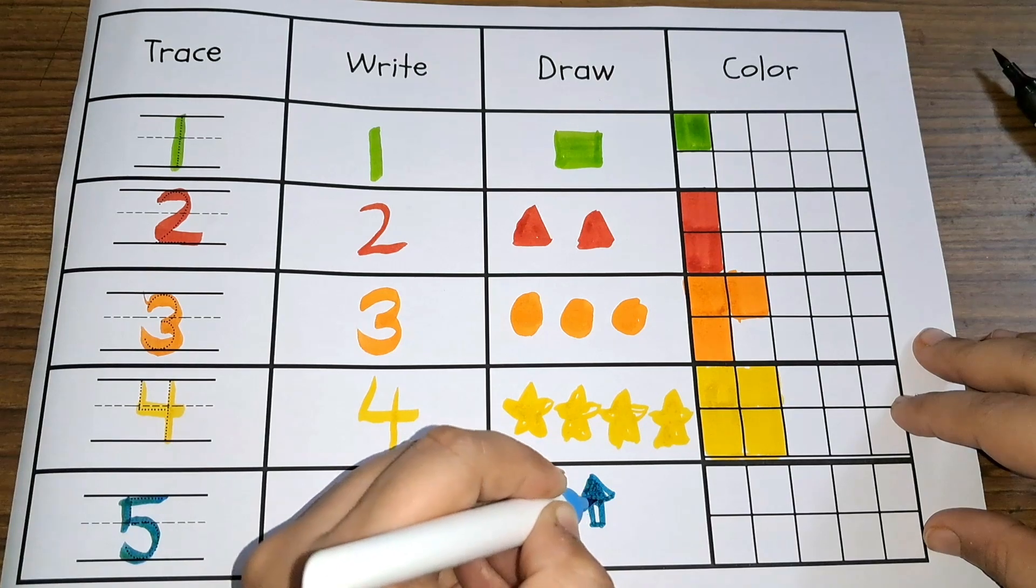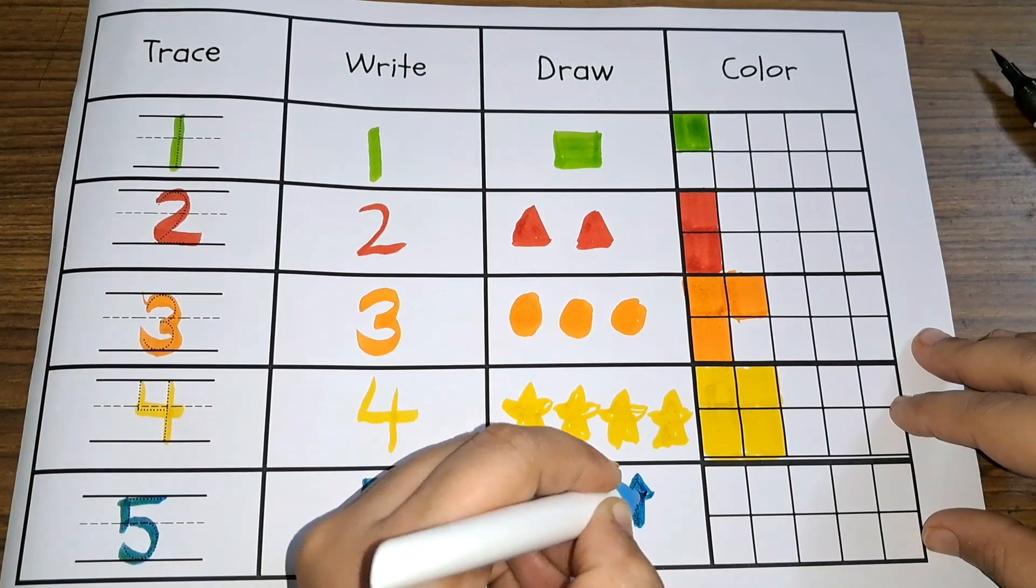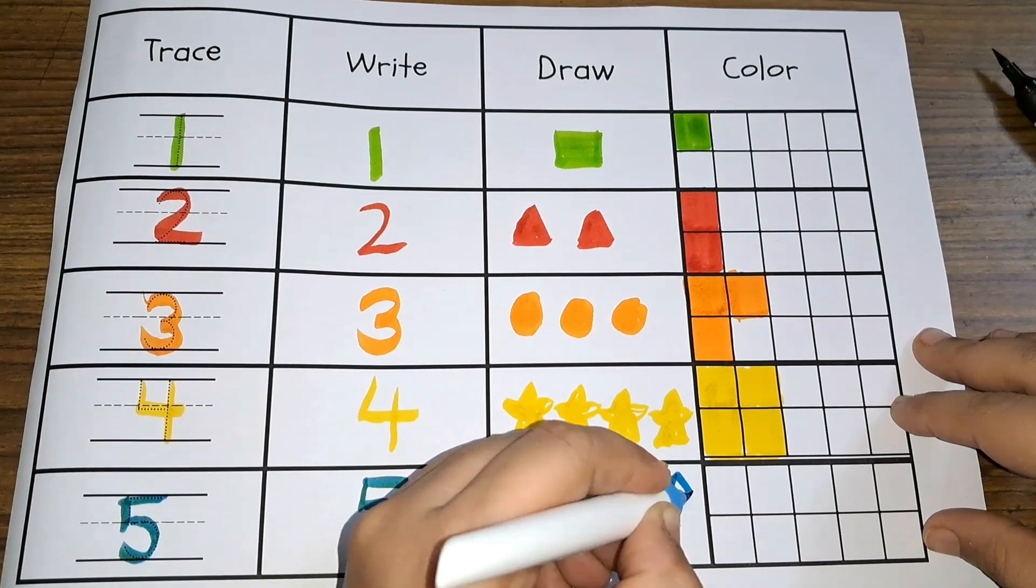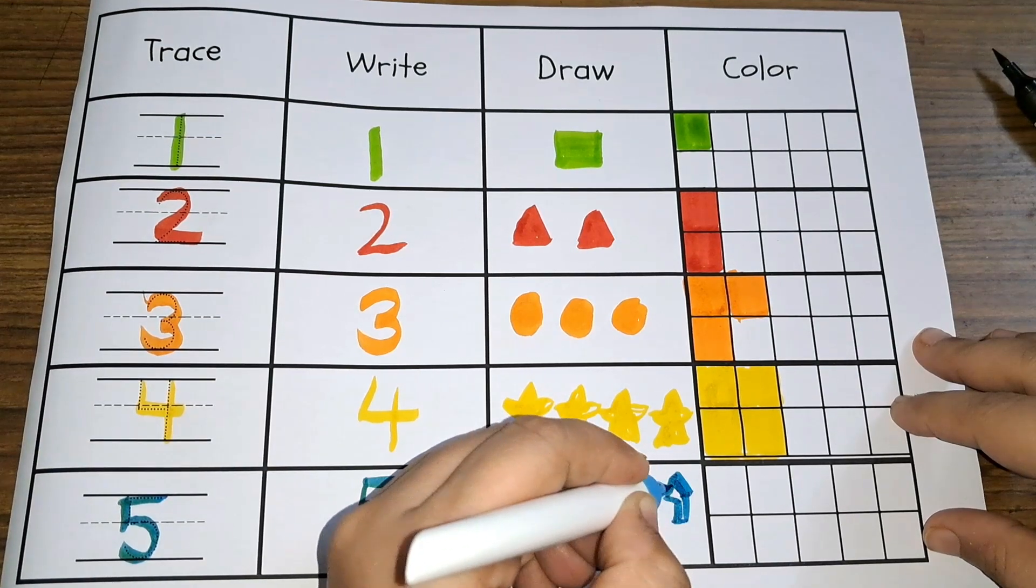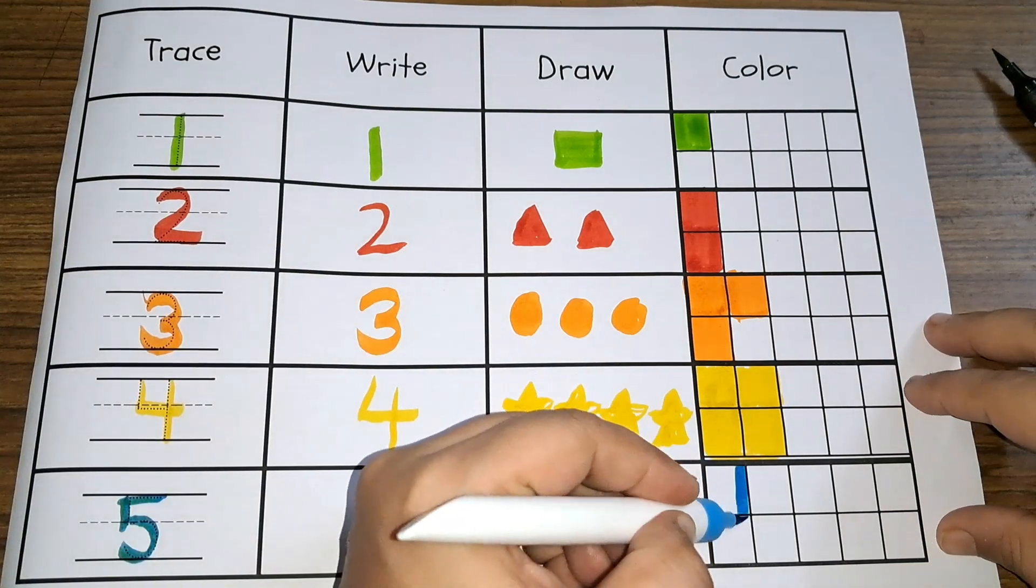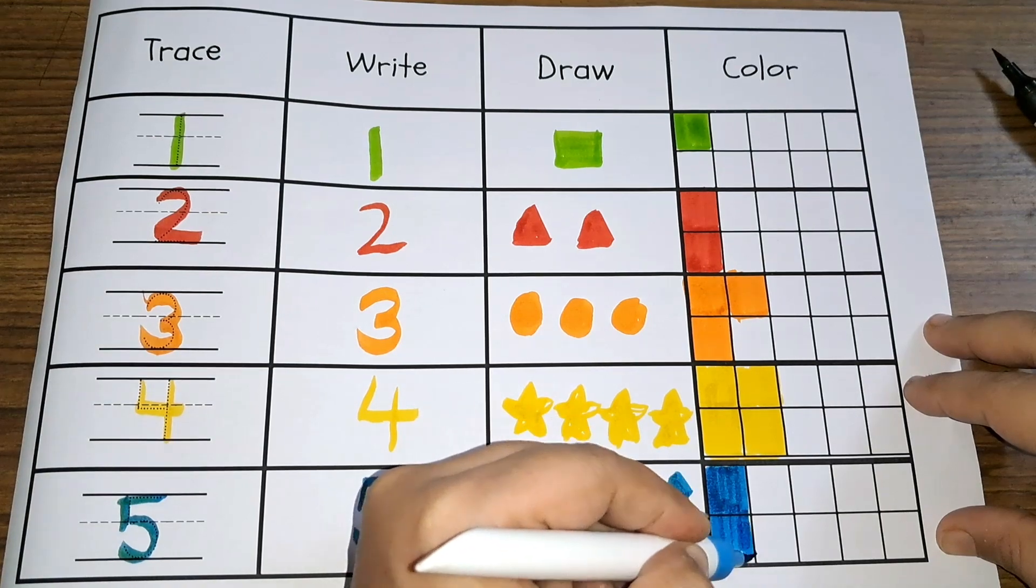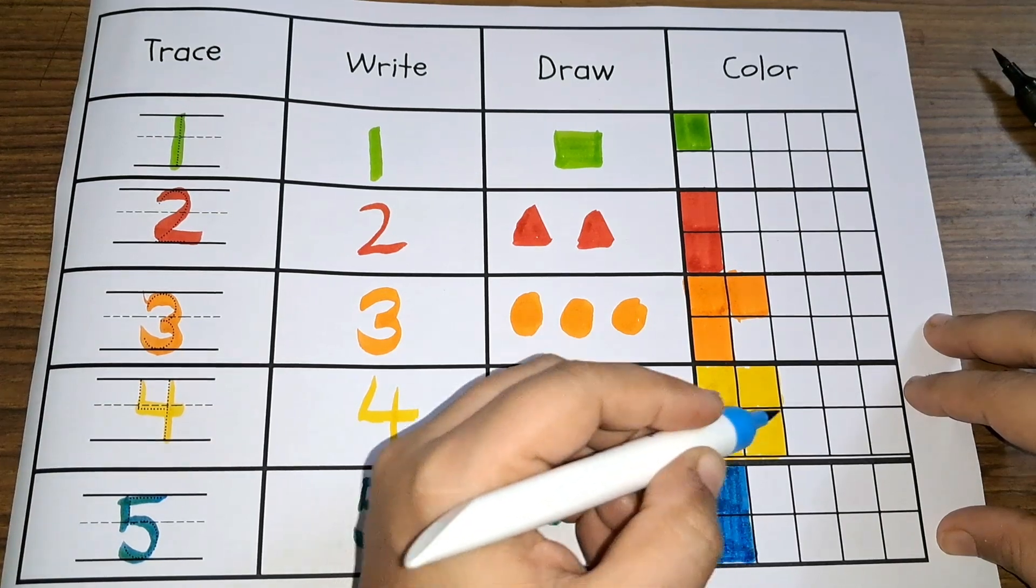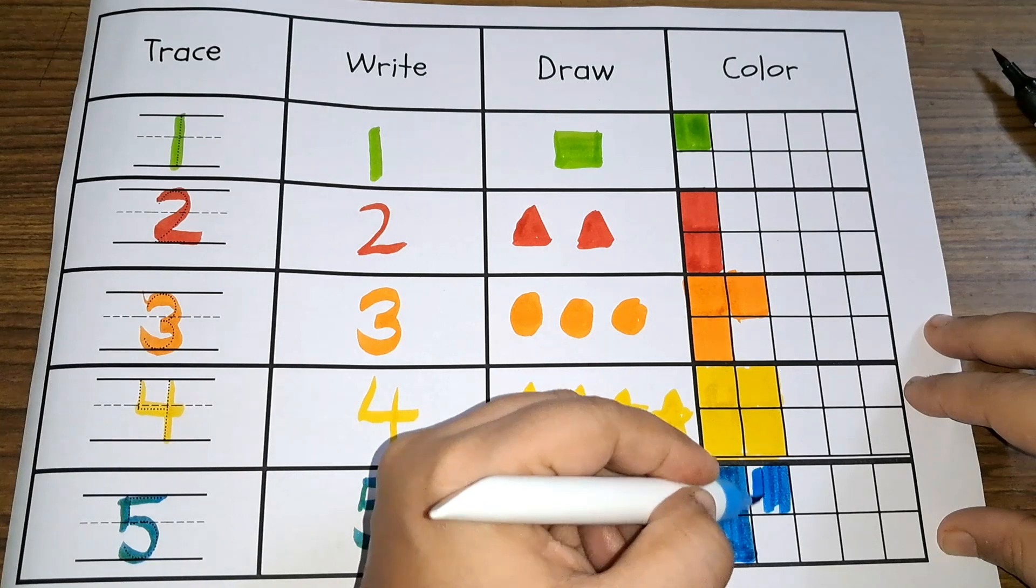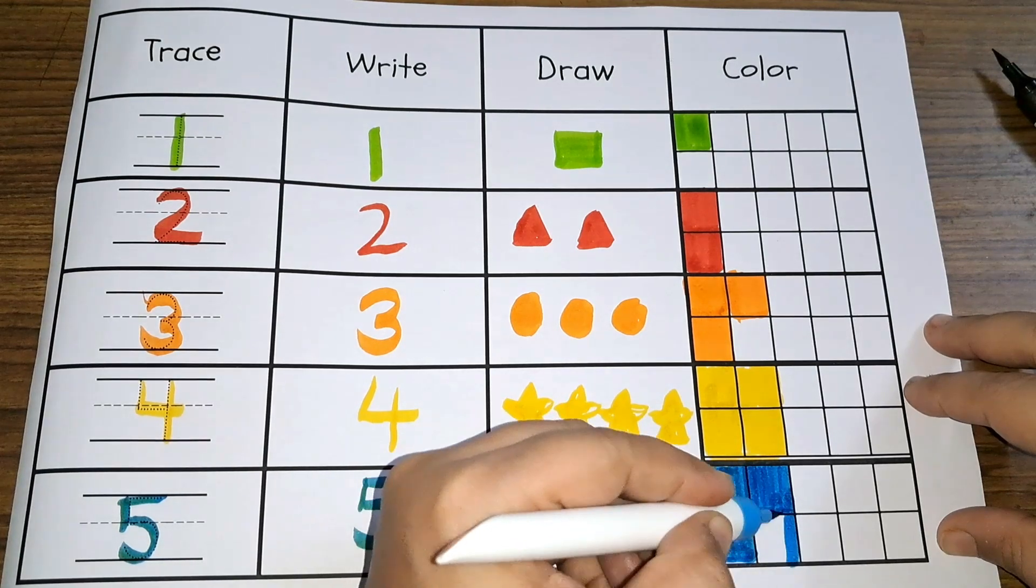1, 2, 3, 4, and 5. 5 arrows. Let us color the squares: 1, 2, 3, 4, and 5.